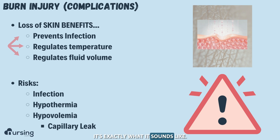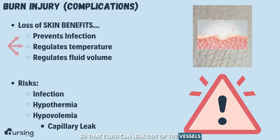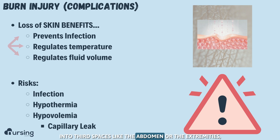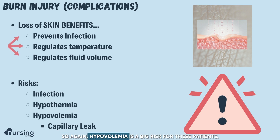The big reason patients are at risk for hypovolemia is capillary leak — exactly what it sounds like: the capillaries start leaking fluid. That fluid can leak out of the vessels into third spaces like the abdomen or the extremities, or it could actually leak out of the wound itself and be gone altogether. So hypovolemia is a big risk for these patients.